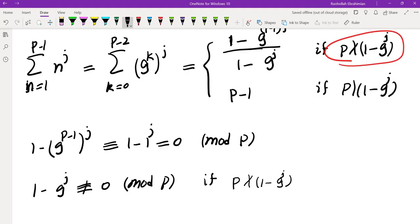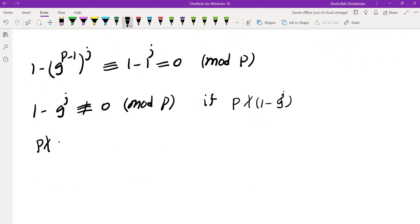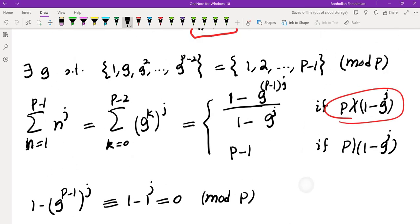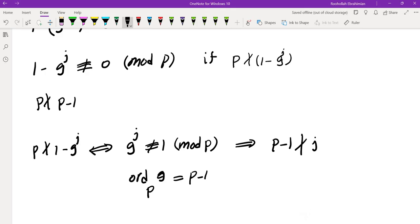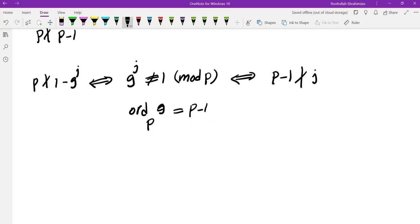Now in the second case, P doesn't divide P-1. So we need to figure out the condition for J such that P doesn't divide 1 - G^j. So when does that not divide? Well, this is the same as saying G^j ≢ 1 (mod P). And because G is the primitive root, the order of G mod P is P-1, that's the same as saying P-1 doesn't divide J. So if it doesn't divide J, then P divides S(J).